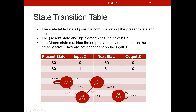I've superimposed the state diagram here to remind us of where we start. We're going to start in the present state of S0. When we're in state S0 and our input x is a 0, our next state is S0 — we stay in state S0. The output when we're in state S0 is z equals 0. That's where this part of the table gets filled in.